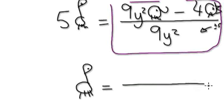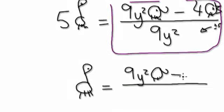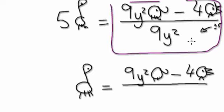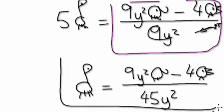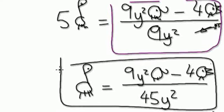The top stays the same, which is nine y squared elephant take away chickens. Remember, five here gets multiplied to the bottom, so nine will merge with the five — so 45 y squared. So giraffe equals this. Ta-da!